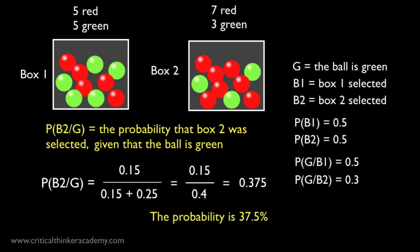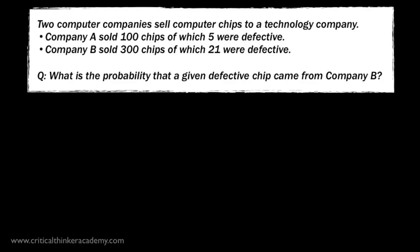Now let's look at another example. Here's a typical sort of problem you often see on math tests. Two computer companies sell computer chips to a technology company. Company A sold 100 chips, of which 5 were defective. And Company B sold 300 chips, of which 21 were defective.